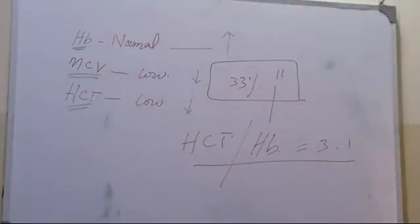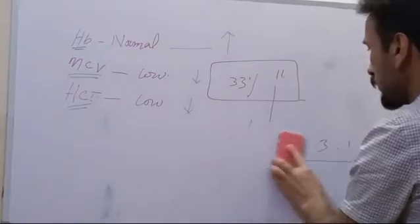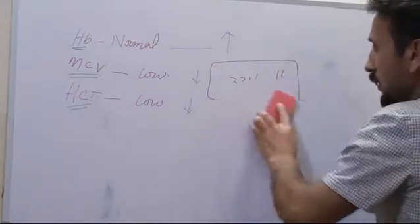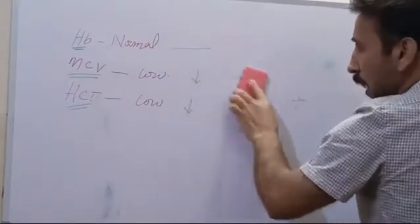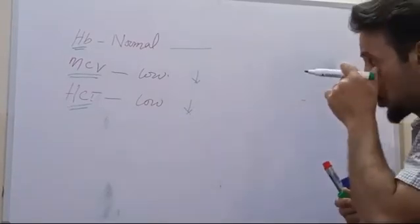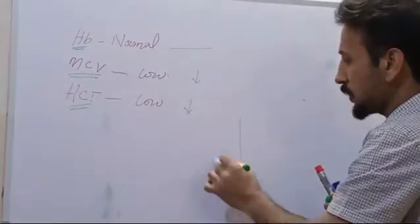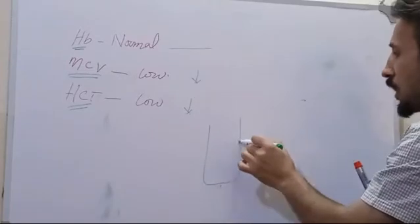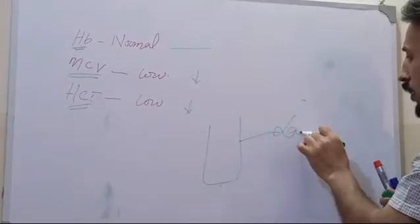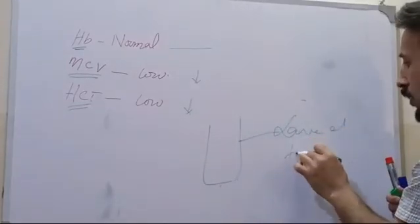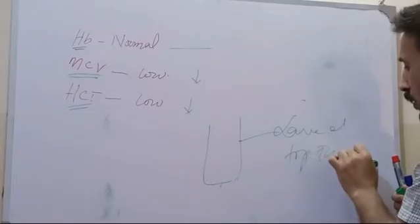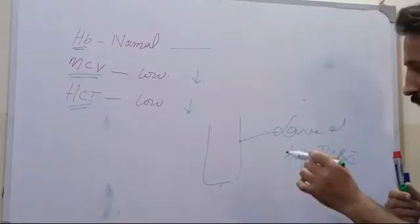And in that case, we have to know that this MCV and HCT, they are actually spurious. What could be the common cause? The common cause could be if the blood has been taken in less quantity in the lavender top tube, which has an anticoagulant of choice.